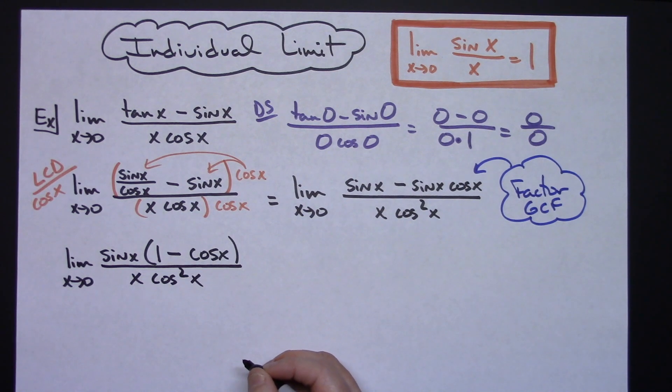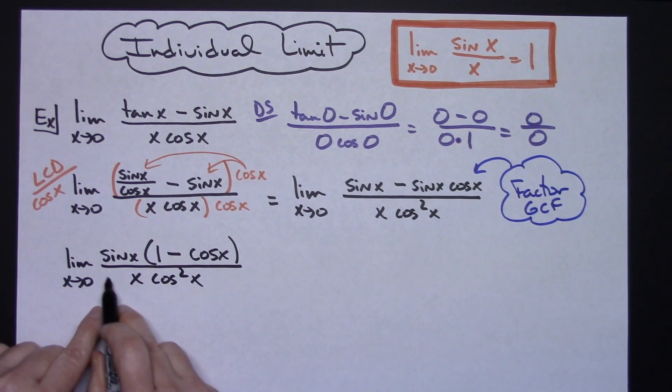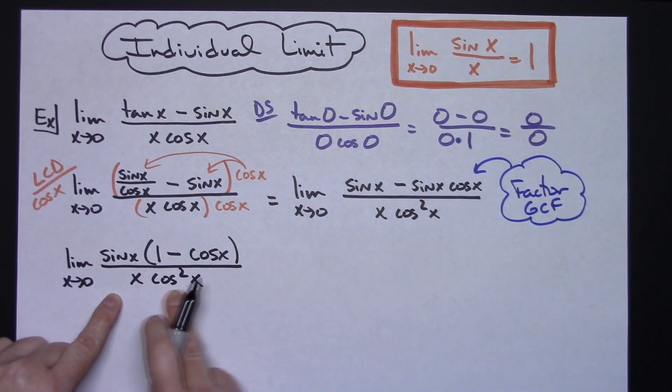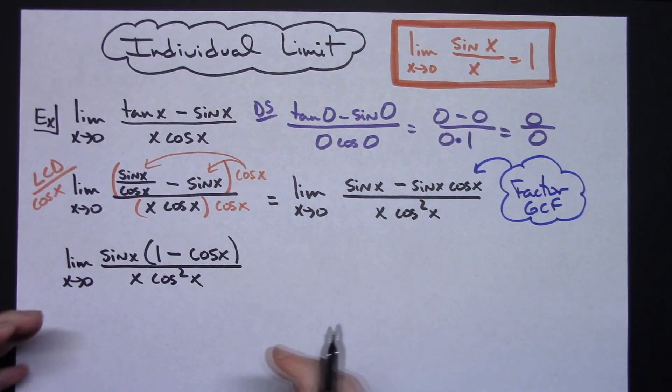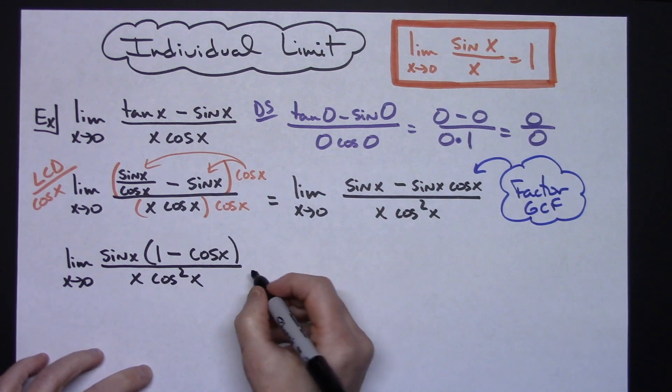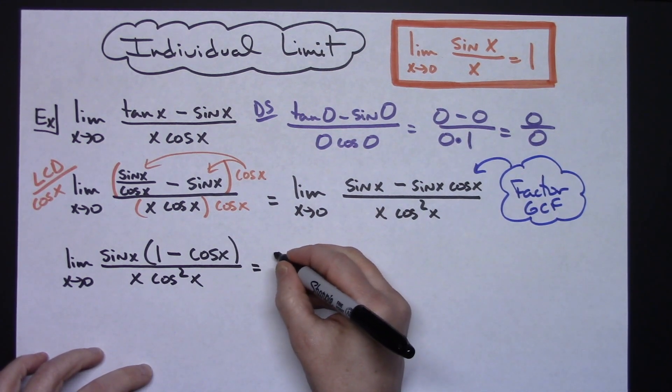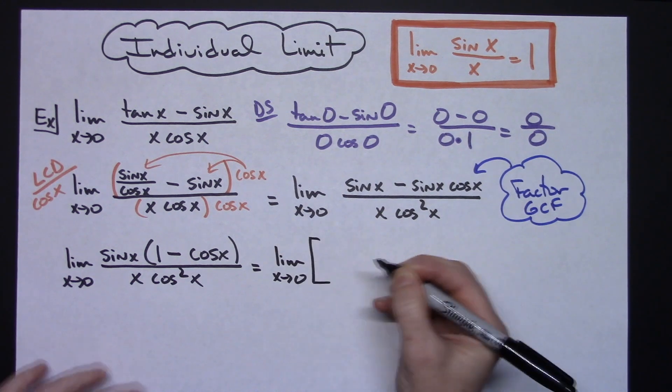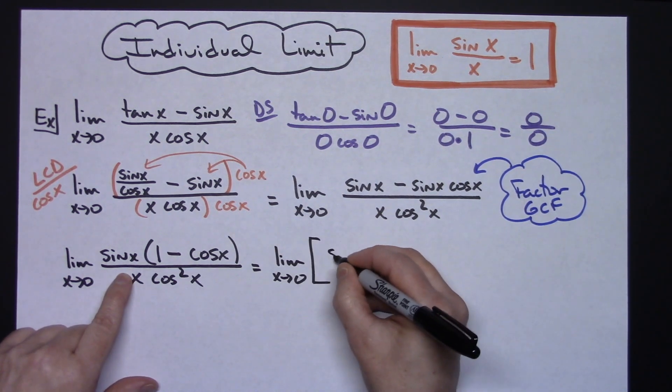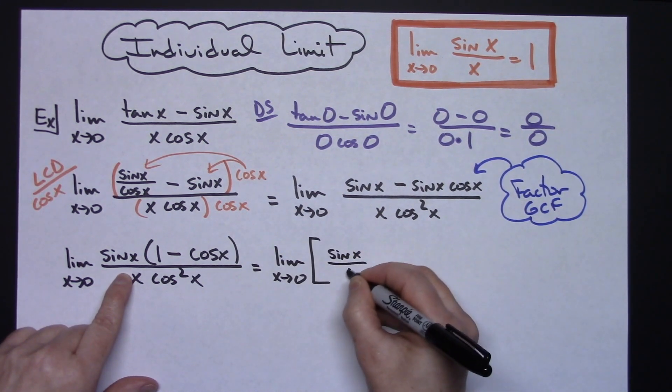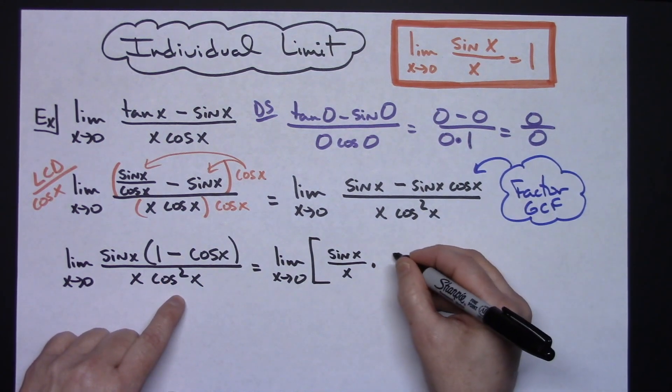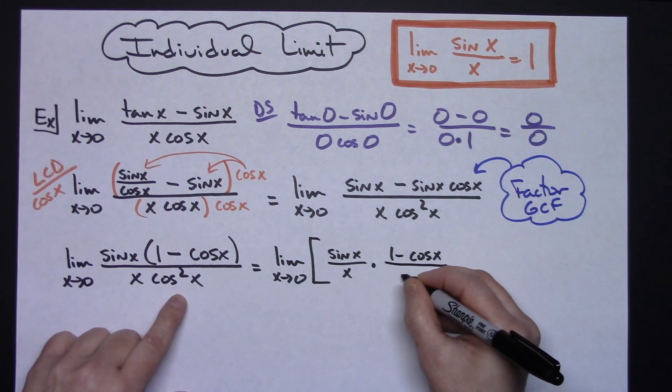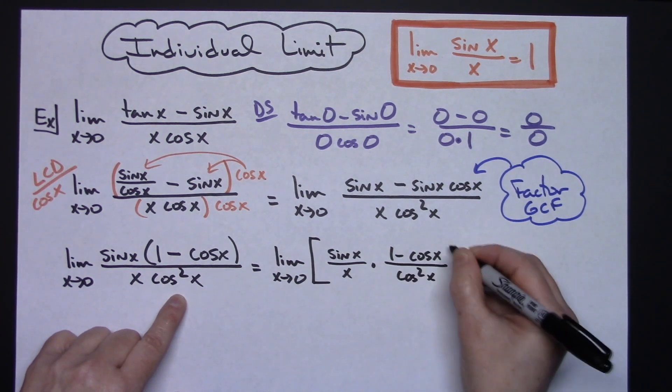Now at this point I'm beginning to see sin(x) over x, which is what we want for this property. I can separate that rational function into two individual rational functions: the limit as x approaches 0 of sin(x) over x times 1 minus cos(x) all over cosine squared x.